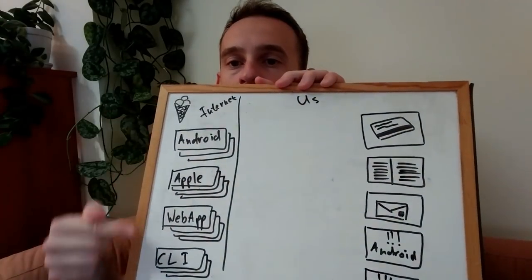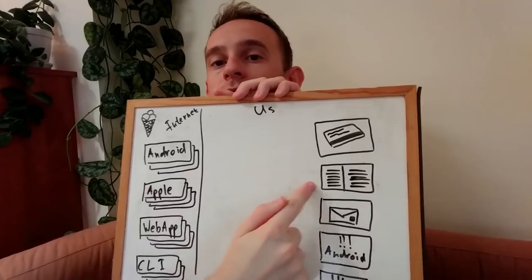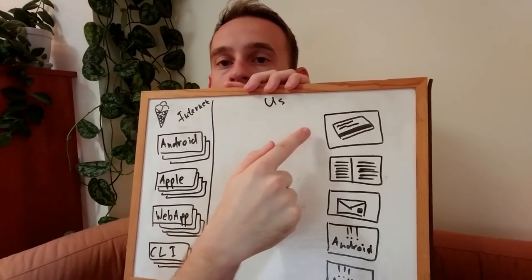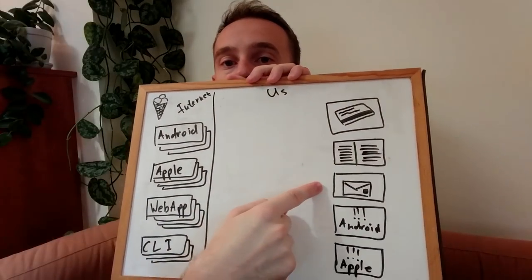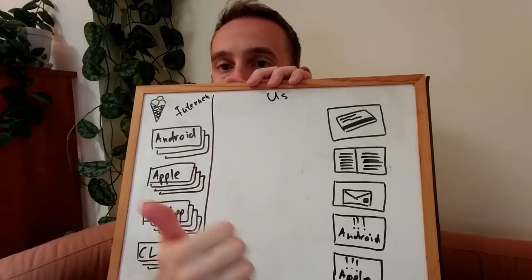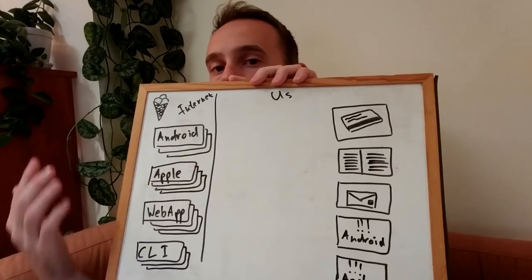Now what should happen when someone orders an ice cream? Regardless of where they order from, a few things should happen: first, the order should be registered. After it is registered it should be paid for, and after it is paid for we will send an email, and if the order came from an Android or Apple device we will send a notification to that device.